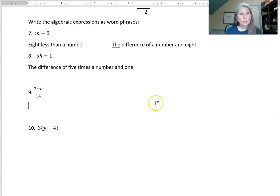This is a quotient overall. It's a division problem. The quotient of - and then what's on the top? Well what's on the top is a difference of seven and a number. So I'm going to say that the quotient of the difference of seven and a number, and then what's the bottom half? It's just 14. So the quotient of - and then what's on the top is the difference of seven and a number - and 14 is on the bottom.